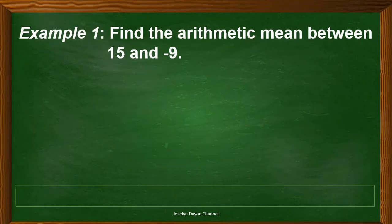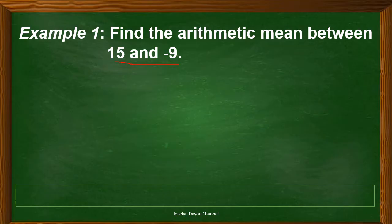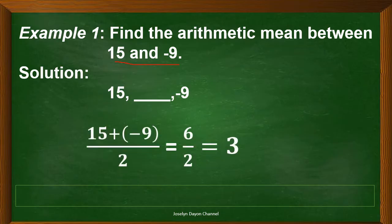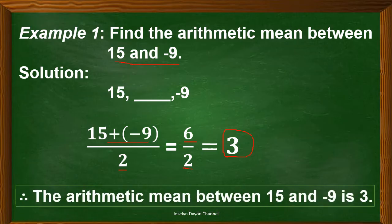Now let's consider the first example: find the arithmetic mean between 15 and negative 9. The fastest and shortest way is to add the two numbers and divide by 2, because we are actually solving for the average between the two numbers. So we have 15 plus negative 9 divided by 2. That equals 6 divided by 2, which is 3. The arithmetic mean between 15 and negative 9 is 3.